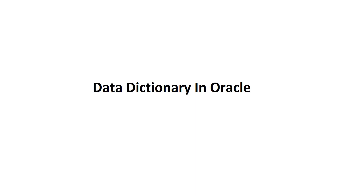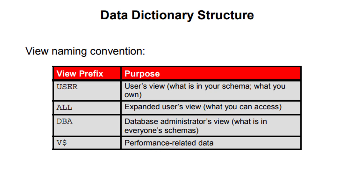In this tutorial we want to see how to use the data dictionary in Oracle database. There are four kinds of data dictionary structures. The first is the USER prefix, which shows what is in your schema — what you own — such as how many tables and objects the user owns.